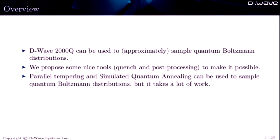So what I'm going to talk about is the fact that we believe D-Wave can be used to sample quantum Boltzmann distributions. We propose these two tools, which have already been talked about. One is this idea of quenching, and the other one is called post-processing, which I'll try to justify. And you can also use two other tools, which we've evaluated extensively, parallel tempering and simulated quantum annealing, to sample these distributions, but they take a lot of work, so we can compare it against D-Wave.